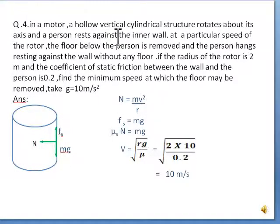Now what is given here? Hollow vertical cylindrical structure rotates about its axis and a person rests against the inner wall. Here friction force fs = mg. So fs = μsN, which equals mg.